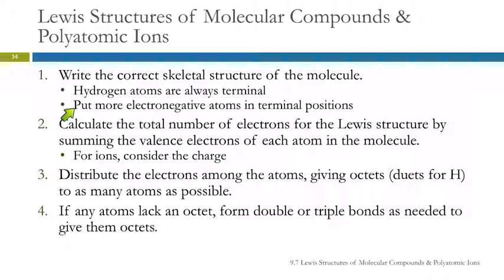Another guideline is to put more electronegative atoms in terminal positions. So if you're trying to decide what goes in the middle and what goes on the outside, probably the more electronegative ones will go on the outside. So draw a skeleton and then you need to figure out the total number of electrons. So this is to add up the valence electrons for each atom. And if you have an ion, you can do this for polyatomic ions. You have to consider the charge. If the charge is plus two, that means you have to take away two electrons. If it's minus three, you have to add three electrons.